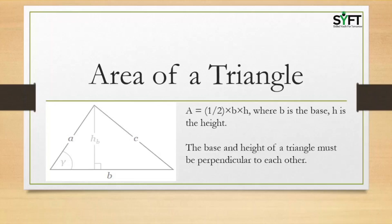Area of a triangle is equal to half base into height — half b into h — where b is the base and h is the height. The base and height of a triangle must be perpendicular to each other.